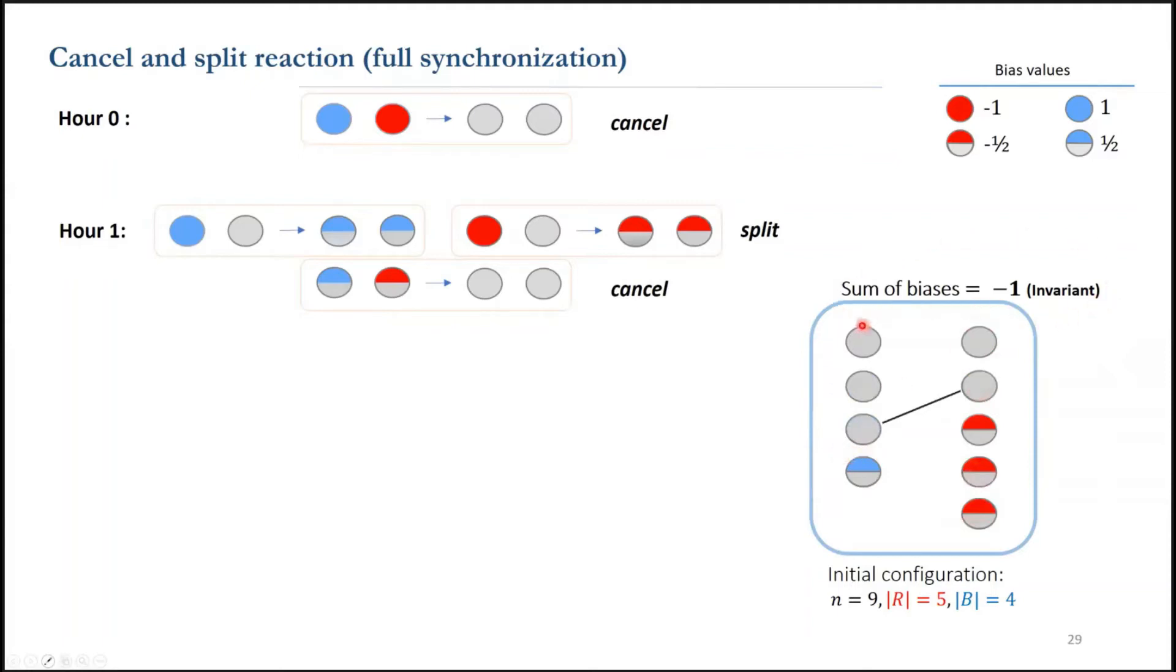Both cancel and split reactions preserve the sum of the biases across the population. With the synchronization, we limit the agents to split at most once during each hour, because certain split reactions are not allowed before a specific hour.